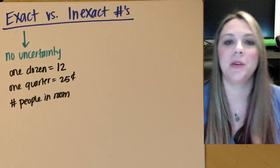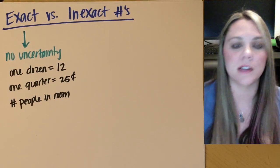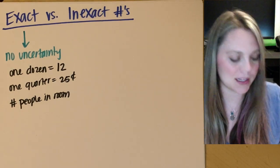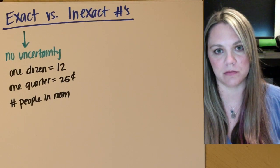If I was counting the number of people in my house, one, two, three, it's not going to be like 3.444 people, right? So you're talking about exact, no uncertainty numbers. There you go.